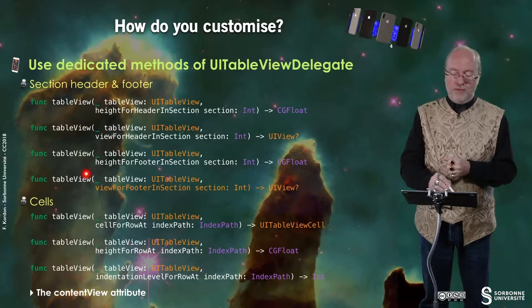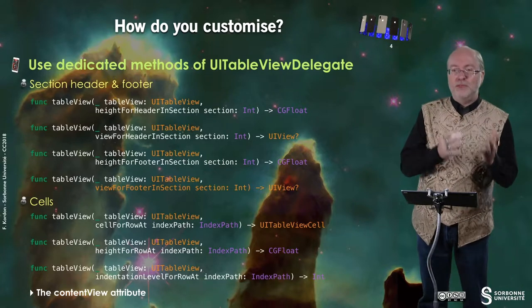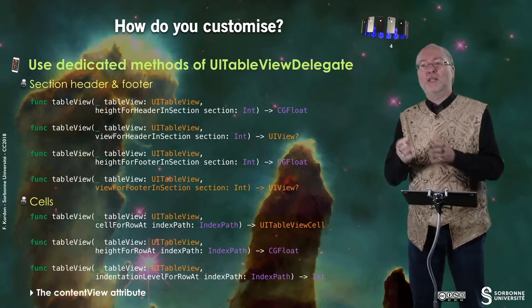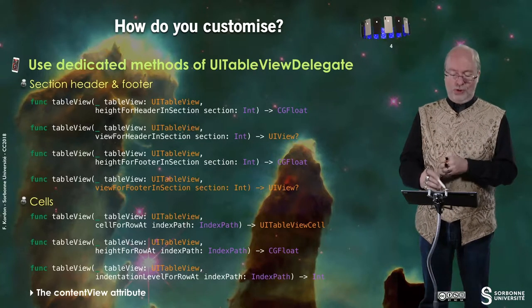To customize your TableView, you need to implement dedicated methods of the UI TableView delegate protocol. You have methods to define section headers and footers, and you also have several methods to describe the new appearance of cells.